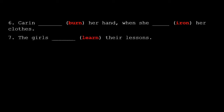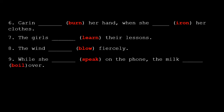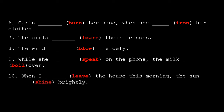Number 7: The girls [learn] their lessons — the verb given is learn. Number 8: The wind [blow] fiercely. Number 9: While she [speak] on the phone, the milk [boil] over. Number 10: When I [leave] the house this morning, the sun [shine] brightly — leave and shine are the verbs given. Children, I hope you have understood what you have to do — use the verbs in simple past and past continuous tense to complete the sentences.